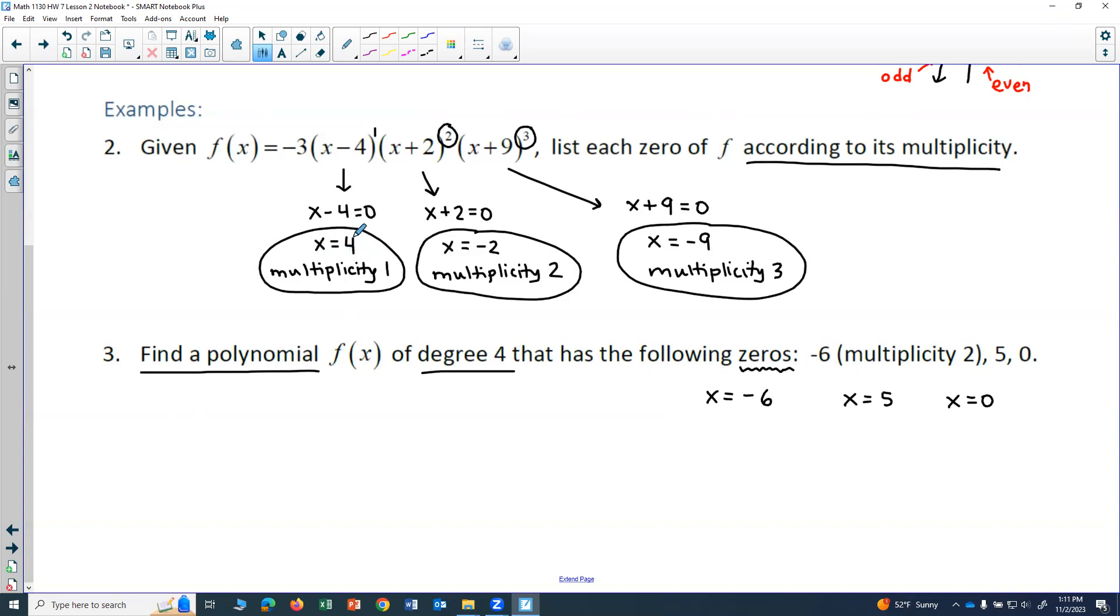So down here, if I have a zero of negative 6, the factor that's associated with that is actually x plus 6 equals 0.